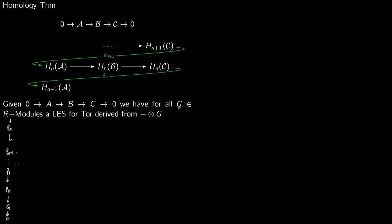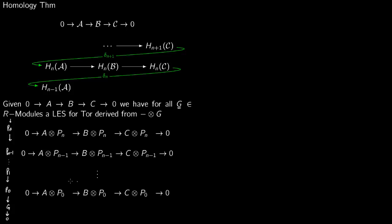Once you have the projective resolution of G, you tensor the sequence with P₀, getting A⊗P₀ and B⊗P₀. Because P₀ is a projective module, tensoring with it preserves exactness, giving an exact sequence. Similarly, tensoring with P₁, P₂, ..., Pₙ₋₁, and Pₙ — each being projective — also yields exact sequences.